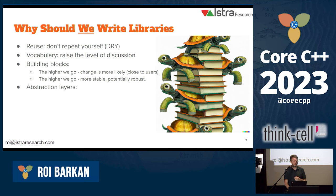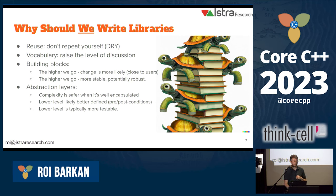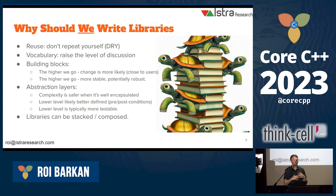If we think about libraries as abstraction layers, complexity can be safer when it's well encapsulated. Lower-level code is better defined — less change from the outside means we can define our preconditions, postconditions, and invariants more clearly. And typically that makes it more testable. Writing something as a library often means we can write it in a more testable fashion. It's not just library code versus application code — it's a whole stack, libraries all the way down.